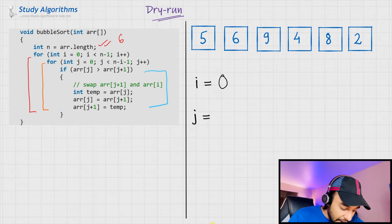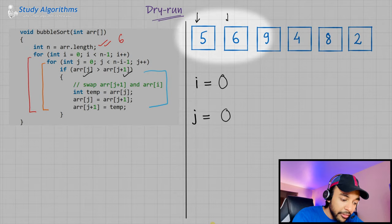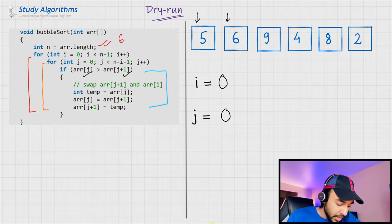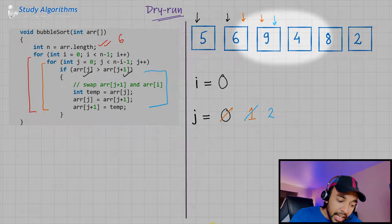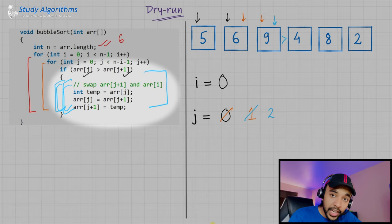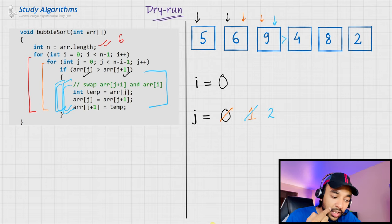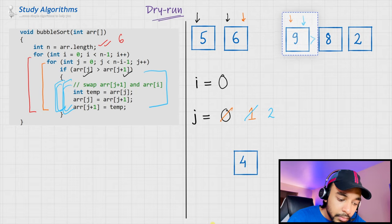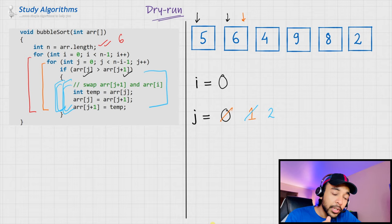The value of i starts from 0, and the value of j starts from 0. That means we are pointing at the first element. Then, we compare array at j and j plus 1. So, we are comparing 5 and 6. Since they are in the sorted order, we won't be swapping them. Moving forward, the value of j changes to 1. So, I am pointing at 6. Now, I would be comparing 6 and 9. Since they are also in the sorted order, no change is required. Moving ahead, the value of j changes to 2, and I am pointing at 9. This time, when I compare 9 and 4, 9 is greater than 4. And hence, this part of the code will execute. And over here, we are swapping these two elements. So, when this executes, our array becomes this.